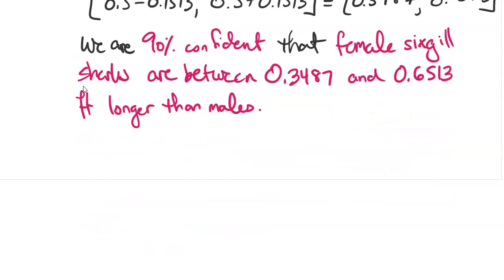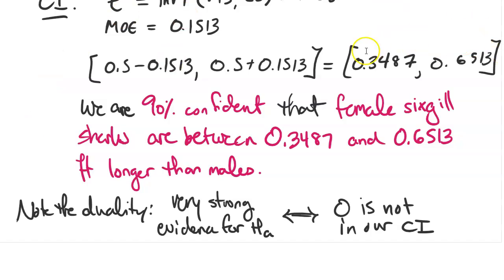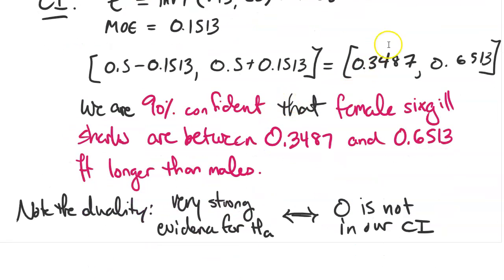Notice the duality. Since we have very strong evidence for the alternative, that means that 0 is not in our confidence interval, because the confidence interval is the range of likely values for the parameter, which in this case is the difference of the means. Our alternative hypothesis is likely, so the difference in the means is likely not 0, so 0 is not going to be included in our interval, so all of this stuff checks out.